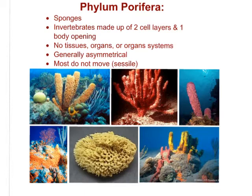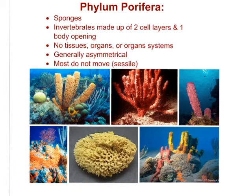Let's start with phylum Porifera. Porifera represents all of the sponges on our planet. It may help to think of pores and how sponges are kind of porous — Porifera has that sound to it. Sponges are invertebrates; they do not have a vertebra. They are made up of two layers and have only one body opening. They do not have any true tissues, organs, or organ systems, and they are generally asymmetrical. Most of them are also sessile, which means they do not move.